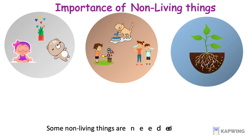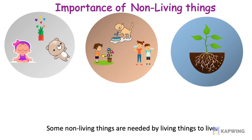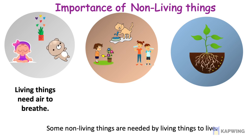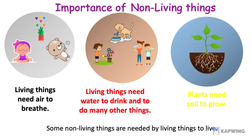Some non-living things are needed by living things to live. Here are a few examples of how non-living things such as air, water, and soil are useful to living things. Living things need air to breathe, living things need water to drink and to do many other things, and plants need soil to grow.